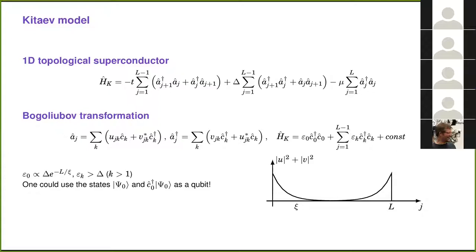The wave function of the particles is localized at the edge of the chain, and this property makes it attractive for use as a base for topological quantum computations. More precisely, one can use the ground state of such a superconducting chain and excite the state with an excited Majorana mode as a qubit. This is beneficial because other states are well separated by the superconducting gap in energy scale.